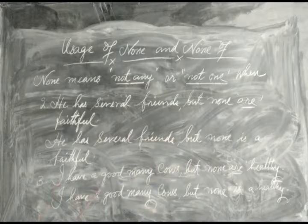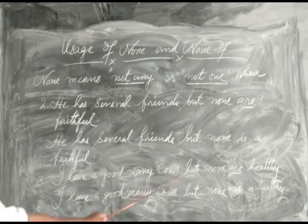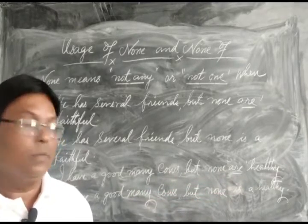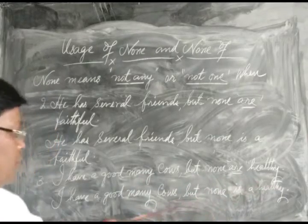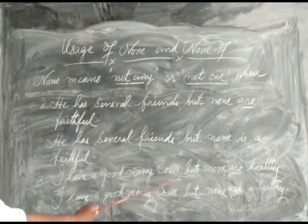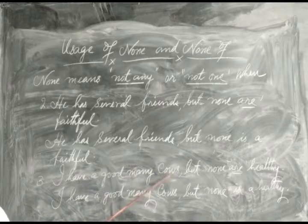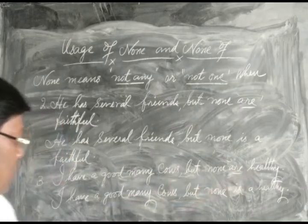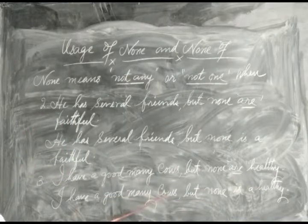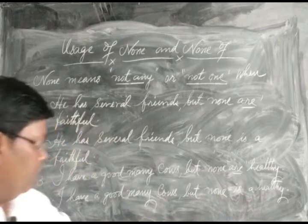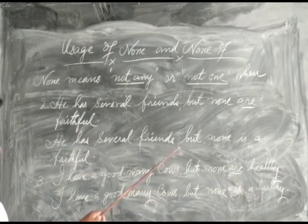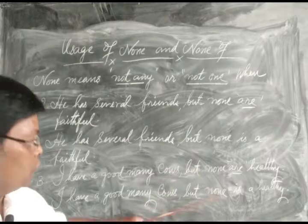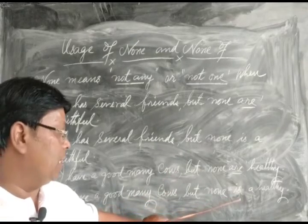Same thing: 'I have a good many cows but none are healthy.' Because the reference is to the plural noun 'cows,' taken as a whole, the plural verb 'are' is used. And 'I have a good many cows but none is healthy' — here, with the understanding of singularity referring to each individual cow, the singular verb 'is' is used.